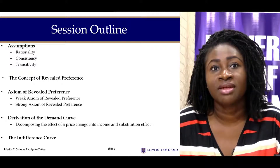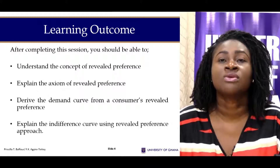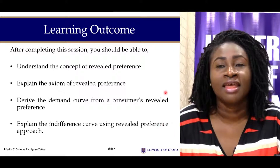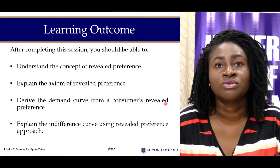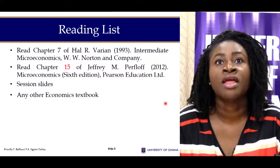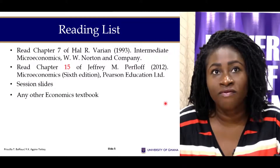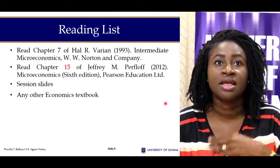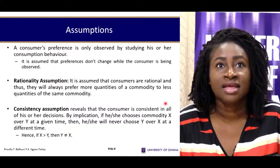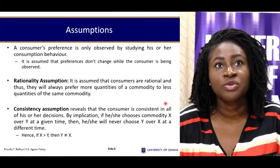We'll try to derive the demand curve and the indifference curves. In terms of the section outcomes, they have been listed, so I would want you to take your time and go through them. The reading chapter is chapter 7 of Varian's Intermediate Microeconomics and any other textbook available to students.